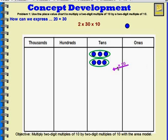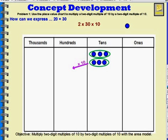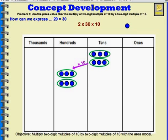What I will do is multiply these 6 tens by 10. When I do, I get that result in the hundreds place — 2 copies in the hundreds place. So my answer to 20 times 30, or 2 times 30 times 10, is 1, 2, 3, 4, 5, 6 hundreds.